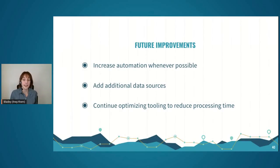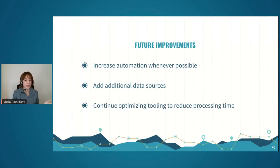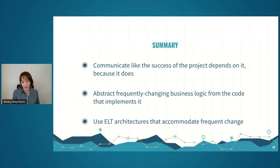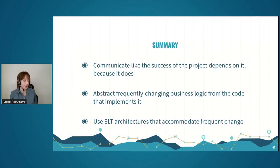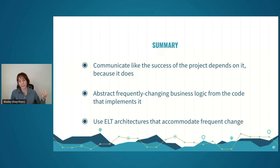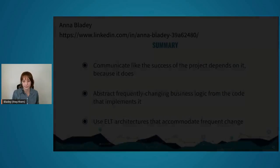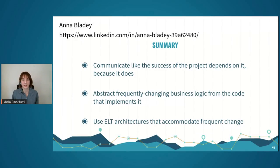That's really all that I have. In the future, we're looking to increase automation whenever possible, add additional data sources, and continue optimizing to push processing time down further. To summarize: if you've broken down your team roles as I've described, communicate like the success of the project depends on it — because it does. Abstract your frequently changing business logic from the stable implementation code. And use ELT architectures because they accommodate frequent change. Feel free to reach out on LinkedIn and fire away with your questions.